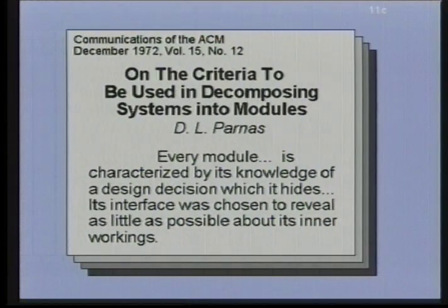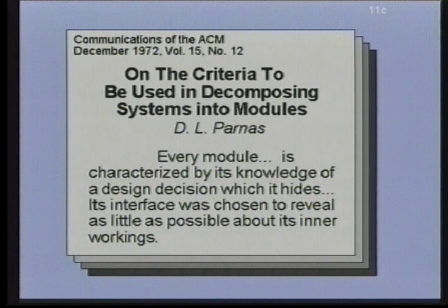I think a lot of us take this approach to system design very much for granted, but it wasn't always this way. In a paper from 1972, Dave Parnas says that every module is characterized by its knowledge of a design decision which it hides from all others; its interface was chosen to reveal as little as possible about its inner workings. This paper introduces this notion of hiding, which plays such a central role in this abstraction framework.